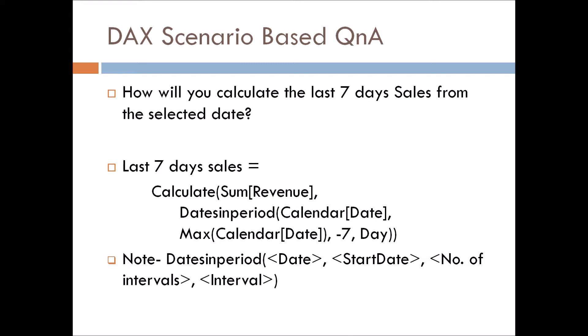For the last 7 days sales, we will make use of the CALCULATE function and DATESINPERIOD function. As you can see, the DATESINPERIOD syntax is: date, start date, number of intervals, and interval. Similarly, we have defined DATESINPERIOD with the date, start date, number of intervals, and interval. Since it is talking about the day level, we are using interval as DAY. And since we are talking about 7 days, we have used minus 7. And from the selected date, we have used MAX of calendar date.